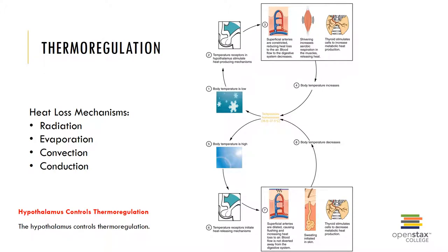There are several heat-loss mechanisms: radiation, which is the loss of heat in the form of infrared waves or thermal energy; evaporation, where heat is absorbed by water molecules that become so energized that they escape as water vapor, taking heat with it; convection, which is when the skin transfers heat to the air that overlies the skin of the body, causing the movement of air molecules (remember, hot air rises); and conduction, which is the transfer of heat between objects that are in direct contact with one another. Additional heat loss mechanisms include sweating, vasodilation of capillaries in the skin, and behavioral modifications.